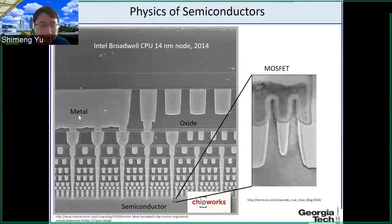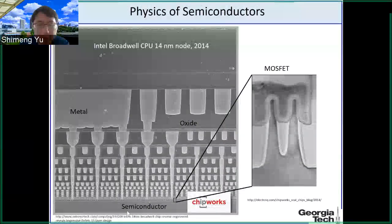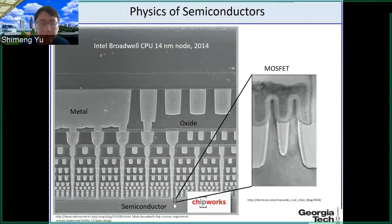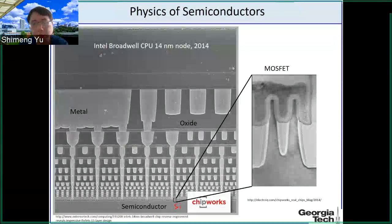Here we are going to discuss the semiconductor substrates from today's lecture. Silicon is used as a substrate material, and the transistors are built on top of this silicon substrate.